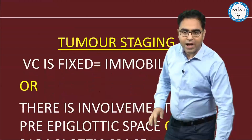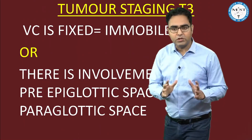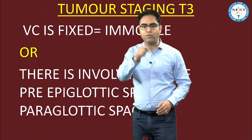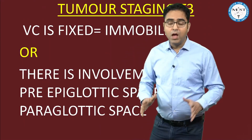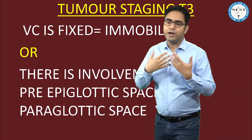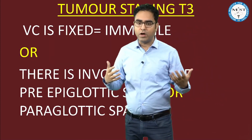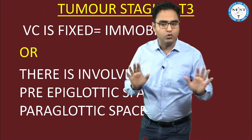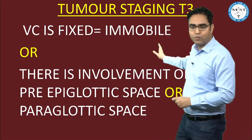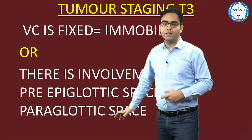Now T3 — the most commonly asked MCQ is about T3. T3 means vocal cord is fixed or immobile. If the question mentions a big story but it says the left or right vocal cord is fixed or immobile, it is T3. Or if there is involvement of some space — like pre-epiglottic space or paraglottic space — that is also T3. Any space involvement is designated as T3. However, if the tumor is causing impaired vocal cord mobility, that is T2. For T3, only two words are permissible: fixed vocal cord or immobile vocal cord, or space involvement like pre-epiglottic or paraglottic space.